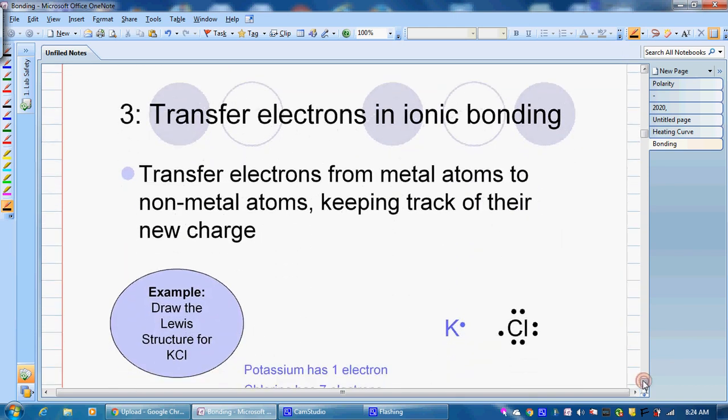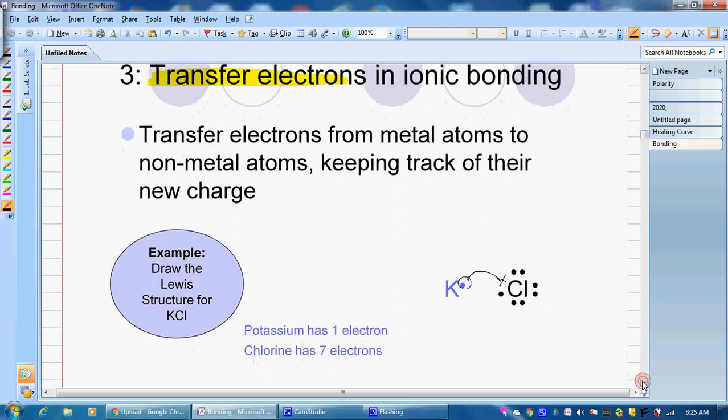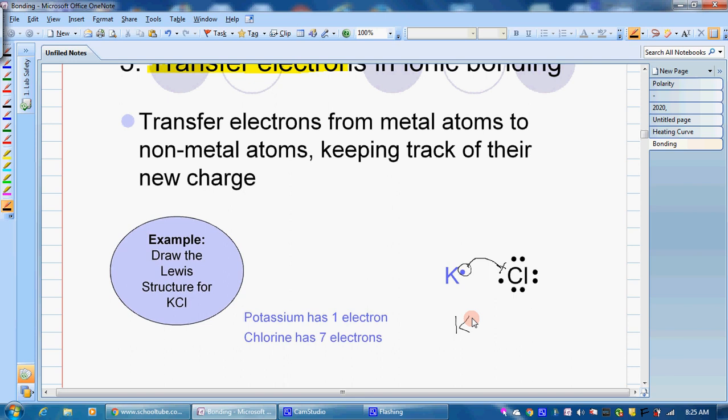So what do we do when we have an ionic bond? There's a transfer of electrons. And that's really important to remember. We have an electron, in this case with potassium, it wants to get rid of that one valence electron, so it's going to transfer that electron over to chlorine. Chlorine's going to gain that electron.